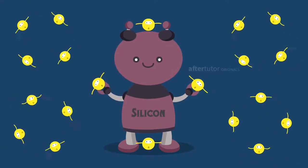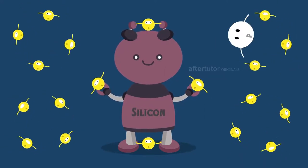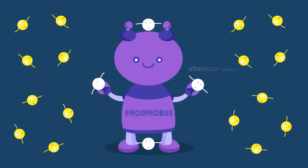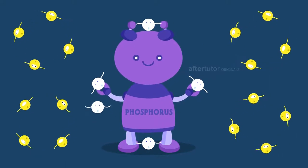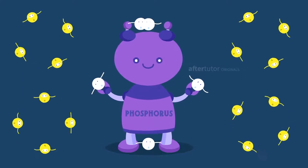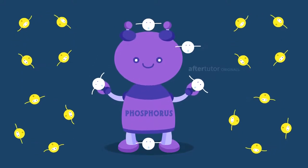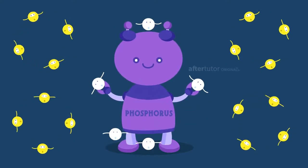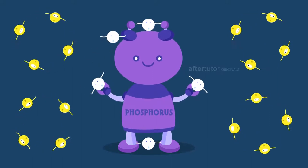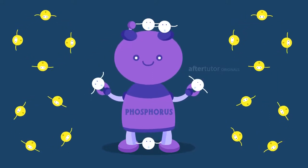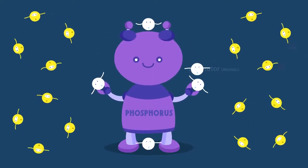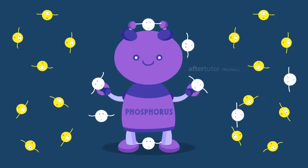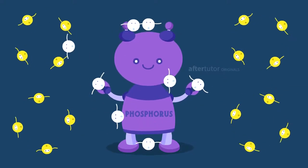For the N-type semiconductor, the pentavalent impurity phosphorus, containing five valence electrons, is doped into a silicon structure. In the five valence electrons, it has one extra electron, and the other four occupy their positions in the shell. This doping increases the number of free electron carriers in the N-type semiconductor.